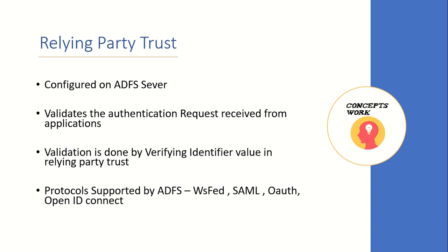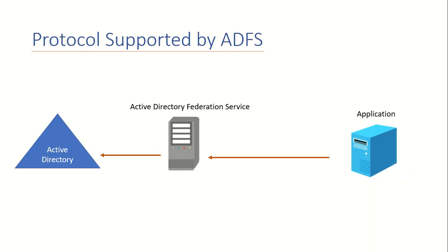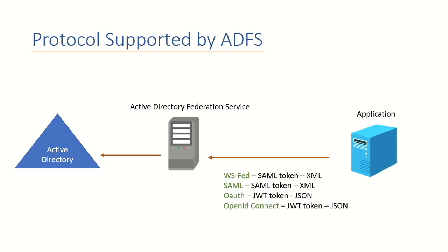Depending upon the protocol you use to contact ADFS, a different type of token will be sent. If you are using a WS-Fed application you'll get a SAML token; if you use SAML protocol you'll also get a SAML token. For OAuth and OpenID Connect you'll get a JWT token. The SAML token from WS-Fed and SAML will be XML-formatted, and the JWT token from OAuth and OpenID Connect will be JSON-formatted.